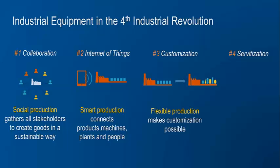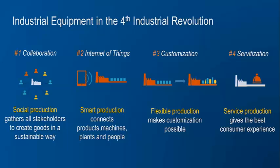Thirdly, customisation leads to flexible production, to create products that the final consumer is looking for. Flexibility is not only manufacturing many different products easily, but also reducing cycle time from idea to product in order to adapt to market trends and social evolutions. Fourthly, servitisation leads to service production to provide the best consumer experience for your customer. Maintenance mobile applications for construction and agricultural vehicles are proof that people are not only looking for products but for complete experiences.